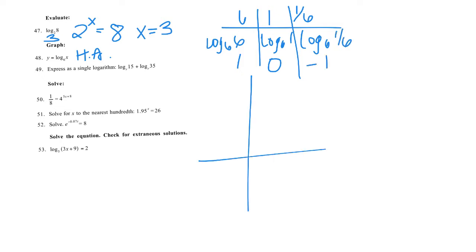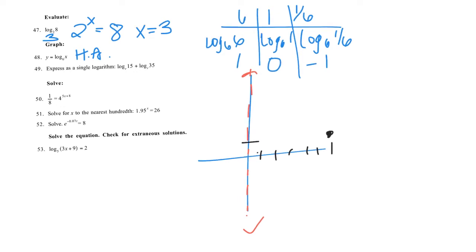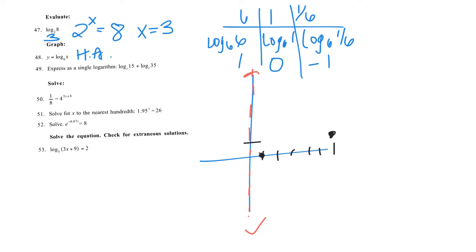And when I graph that, I have an asymptote at X equals 0. There's no horizontal translation, so it's just at 0. And then 1, 2, 3, 4, 5, 6. So at 6, 1; at 1, 0; and at one-sixth, negative 1. And the graph looks like this. You should have a general idea of what the graphs should look like and what their asymptotes are.